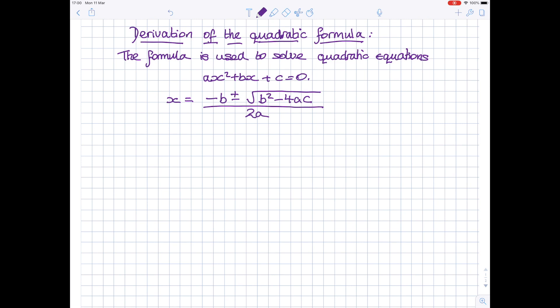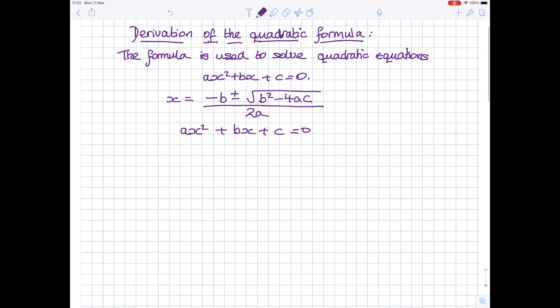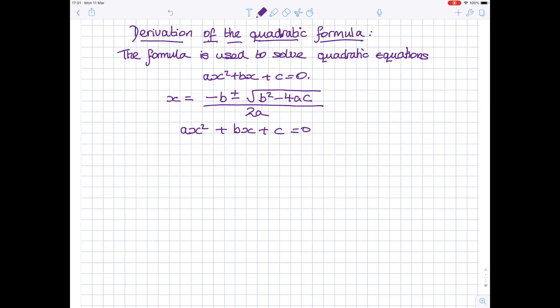Okay, so start by writing down the equation ax squared plus bx plus c equals zero. I'm going to take a factor of a outside to leave me with a quadratic equation where the coefficient of x squared is just 1. So, we get a, and then dividing each term, we get x squared plus b divided by ax plus c divided by a equals zero.